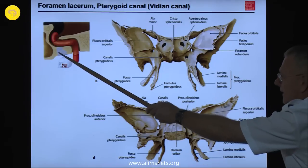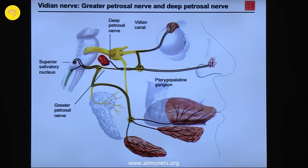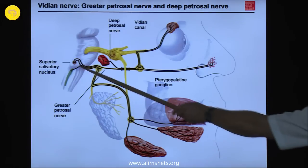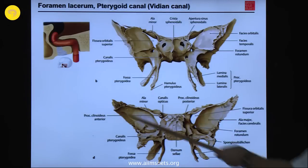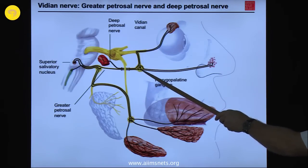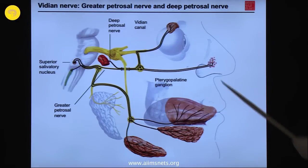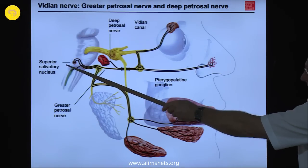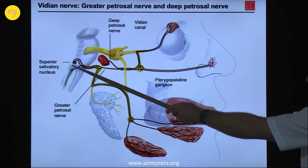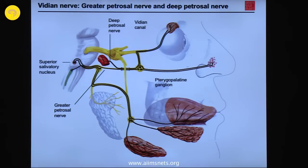One more structure to discuss: the foramen lacerum and the vidian canal containing the vidian nerve, which comprises the deep petrosal nerve and the greater petrosal nerve on their way from the superior salivatory nucleus. They pass through the foramen lacerum, which is occluded by a fibrous mass — not a true cartilage. The vidian nerve contains two parts: the deep petrosal nerve, carrying pre-ganglionic sympathetic fibers originating from the superior salivatory nucleus, which pass through the pterygopalatine foramen to reach the target organs in the nose.